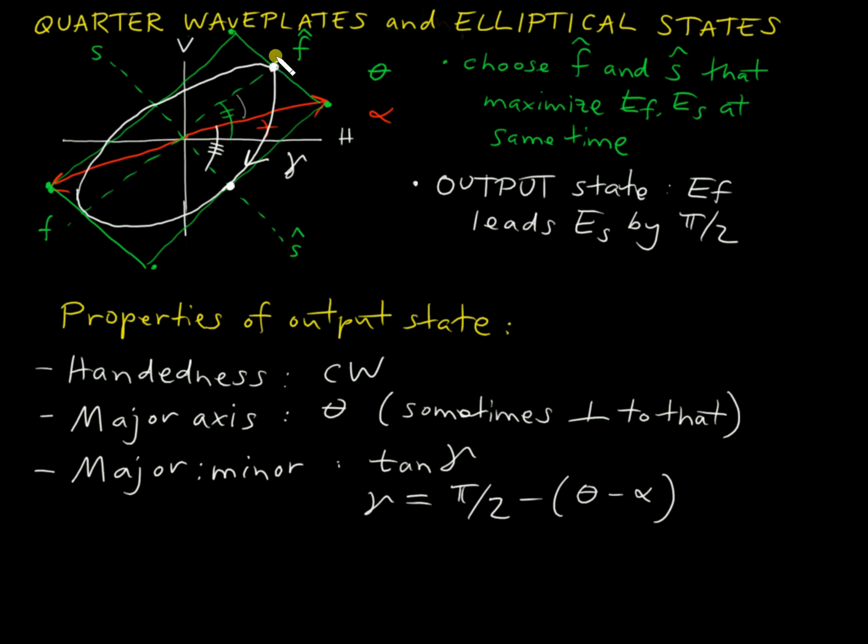And these three properties tell us everything we want to know about how this waveplate has converted a linear state into an elliptical state with some handedness, some orientation of its major axis, and some degree of ellipticity.